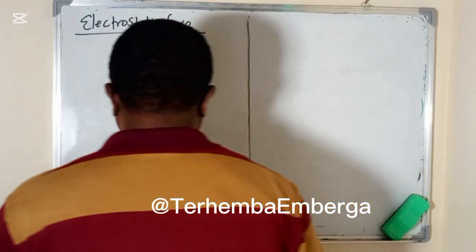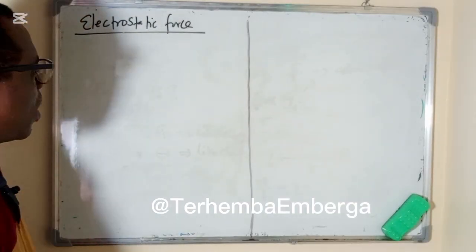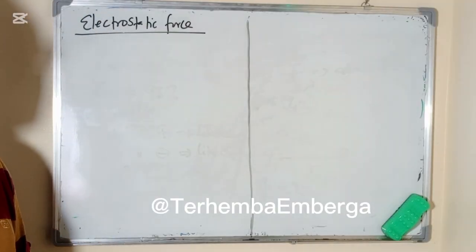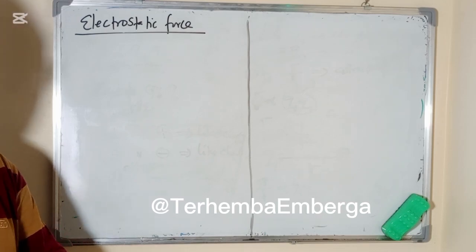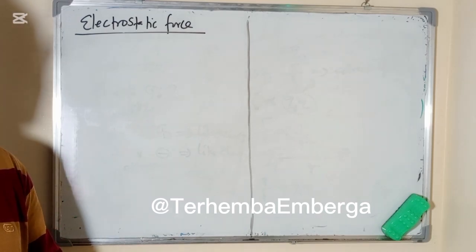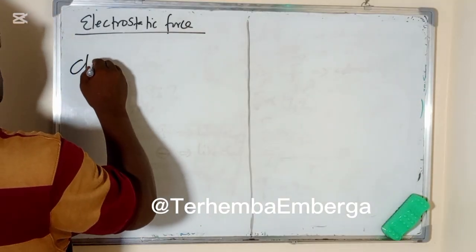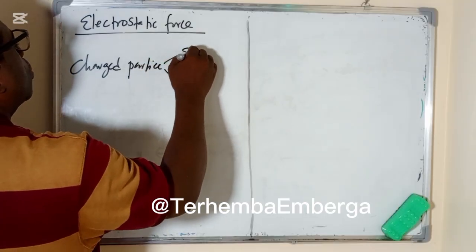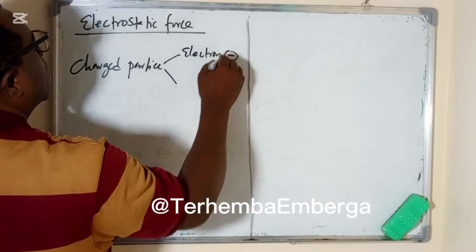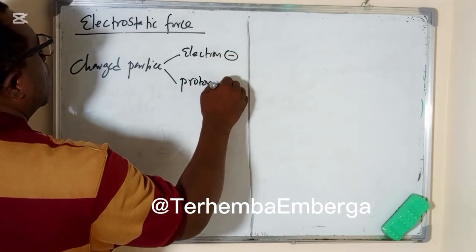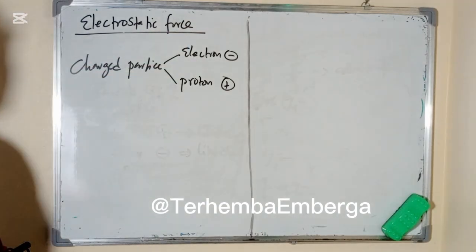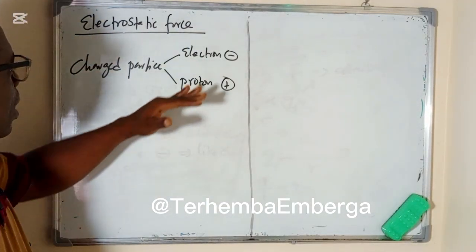What are we referring to by these charges? Normally we know that a charged particle can either be a proton or an electron. A charged particle can either be an electron that is negatively charged or a proton that is positively charged. So these are the charges we are referring to, and we want to look at the force that exists between these charges.